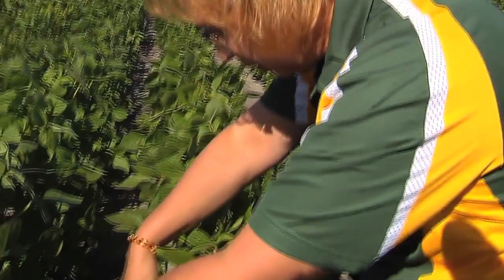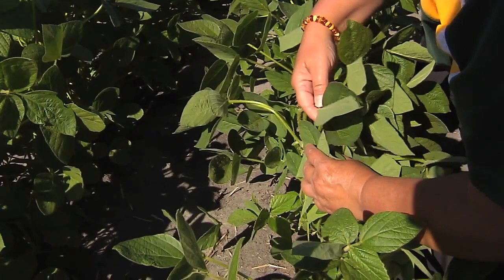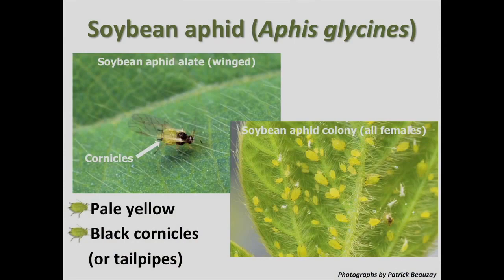You start by looking at the bottom of the plant looking for the aphids, and you need to be able to identify them. They're a small yellow aphid with black cornicles, or tail pipes, and they're about 1/16th of an inch long.